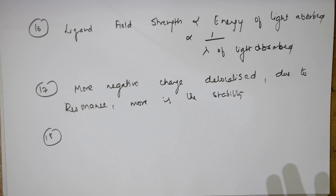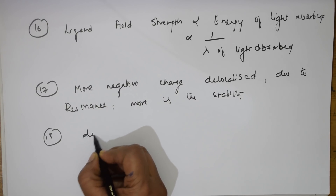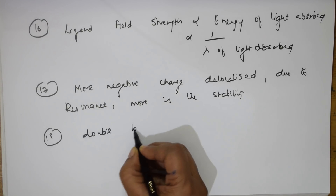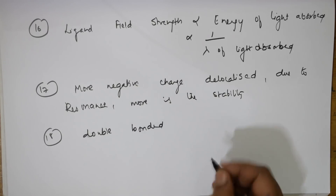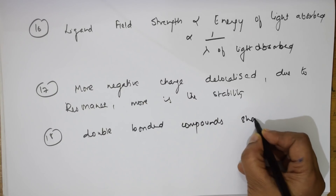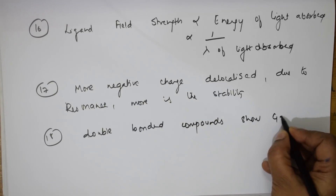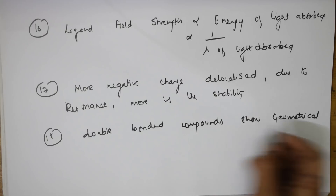The 18th concept: when they ask you about geometrical isomers or optical isomers, remember that double bonded compounds show geometrical isomerism.